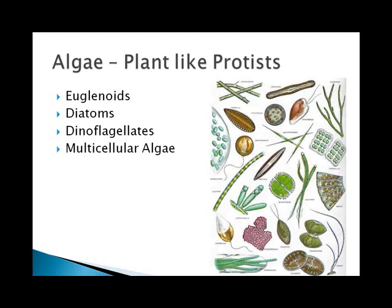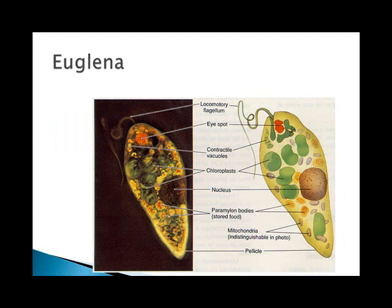Algae are the plant-like protists. These include euglenoids, diatoms, dinoflagellates, and the multicellular algae. The euglenoids are characteristic of euglena. You will need to notice multiple things on this diagram — specifically, besides the flagellum, also the eye spot. The eye spot helps euglena identify where light is and swim toward it so they can perform more photosynthesis.